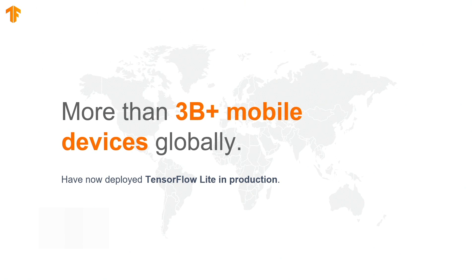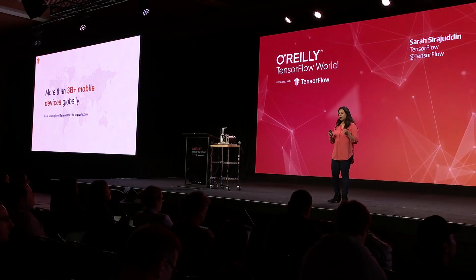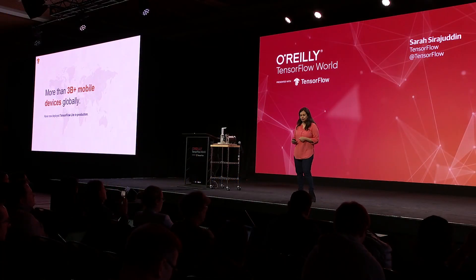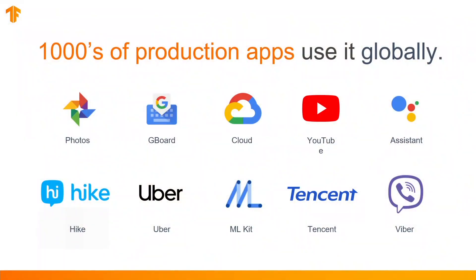Many of Google's own largest apps are using it, as are apps from several other external companies. This is a sampling of apps which use TensorFlow Lite: Google Photos, Gboard, YouTube, Assistant, as well as leading companies like Hike, Uber, and more.